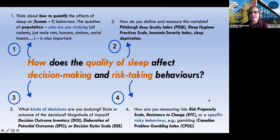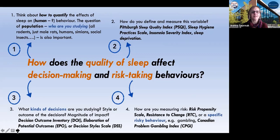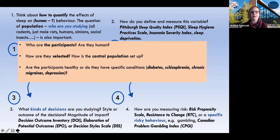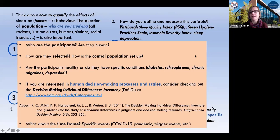Finally, there is the measurement of risk. There are many scales for general kinds of risk behaviors, or there are specific kinds, such as gambling — and there are actually very exciting scales for that. Having looked at all of these things, we should also note the participants and their selection mechanism. Are we going to have a control population? Are the participants healthy, or do they have conditions that might affect sleep? If studying humans, you can go to the decision-making individual differences inventory.